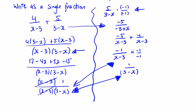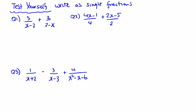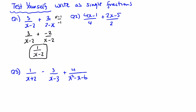Now I'll give you a selection of questions to test yourself — pause the video and see how you get on with algebraic fractions. Here are the first three. For question 1, the denominators are similar, so multiply one of them by minus 1 over minus 1. We end up with 3 over x minus 2, plus minus 2 over x minus 2. So we get 3 minus 2, which is 1 over x minus 2. A nice quick way to simplify that one.